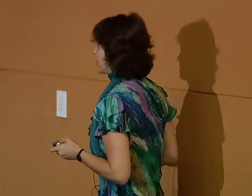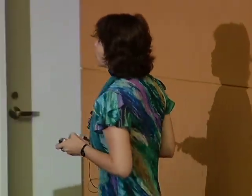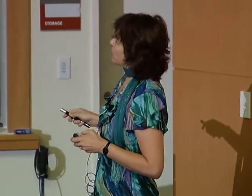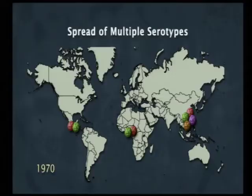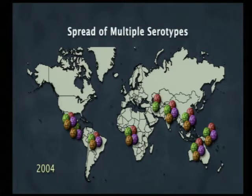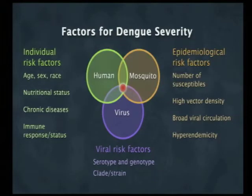In the 1970s there wasn't much dengue around and not much co-circulation of different serotypes, but now essentially all four serotypes are everywhere at once, and this is a big problem. There are many factors involved in disease — not just the human and the virus, but also the mosquito.